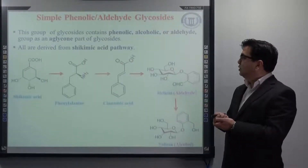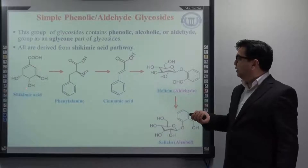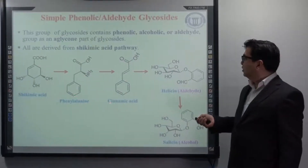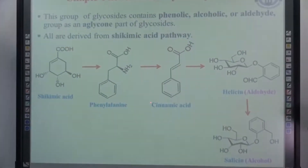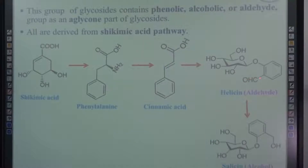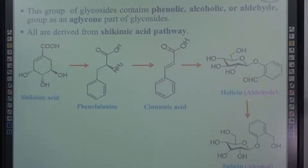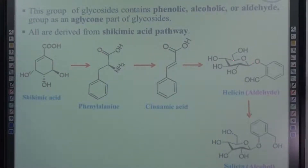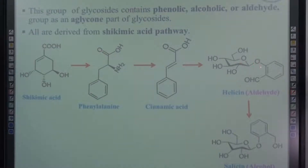We will see some examples. From shikimic acid, phenylalanine forms, which then converts into cinnamic acid. Cinnamic acid then gets converted into halicine. If you look at the structure of the aglycon part of halicine, it is an example of an aldehyde glycoside. It is also a type of O-glycoside, because the linkage atom between the aglycon and glycone is oxygen.